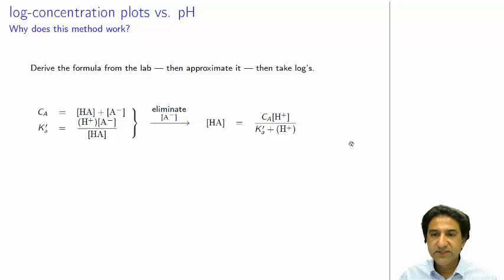And then we can solve for HA and we get this expression, HA equals this. Concentration of A times H plus concentration divided by K plus A on H plus. So actually this equation explains the whole graph.